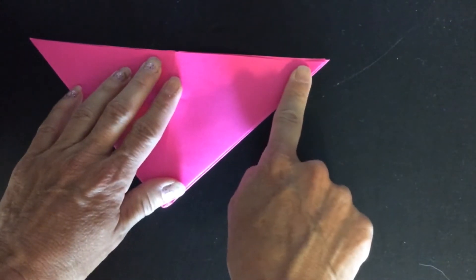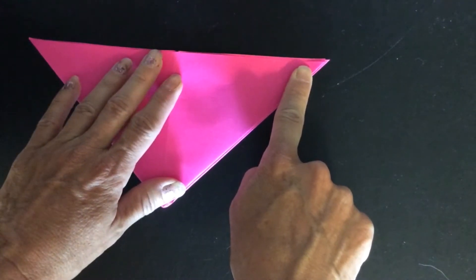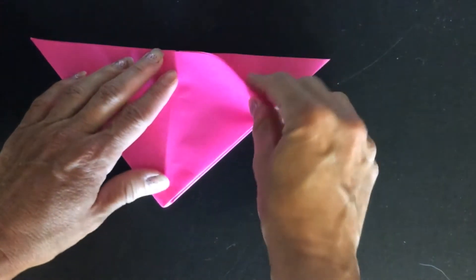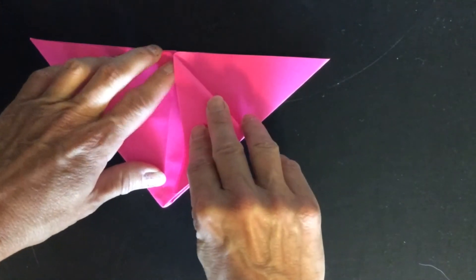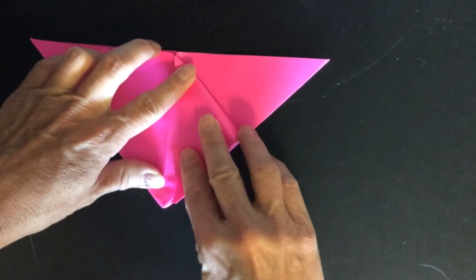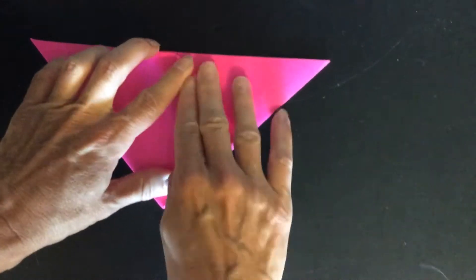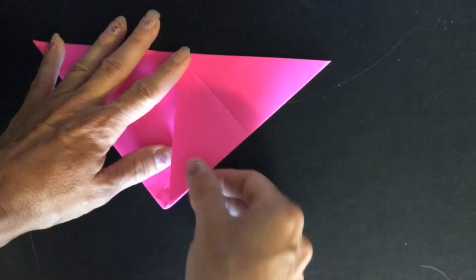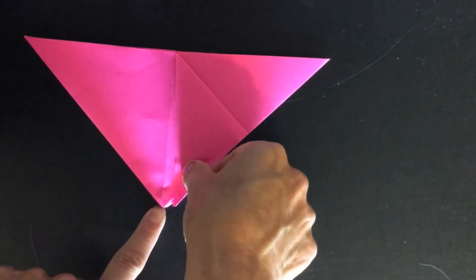So now you take one corner point here and you fold it toward the center but not all the way to the center. Just off center a little bit. So it doesn't meet here.